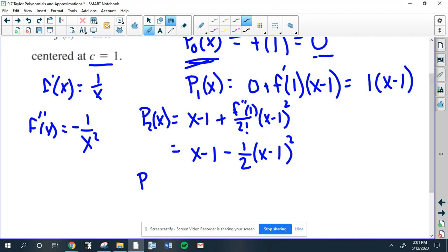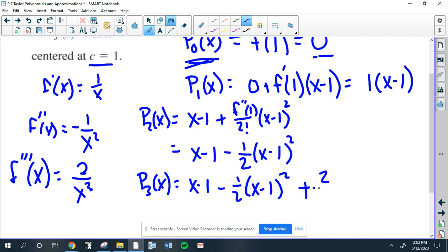So the third - I'm not going to do all these - the third will have every single term that the first two had, but now you add the f'''(X), which is that's X to the negative 2, so positive 2X to the negative 3. I hope I'm doing all this right. So f'''(1) is going to be 2. f'''(1) is 2 over 3 factorial, which is going to be 6, times (X - 1) to the third.